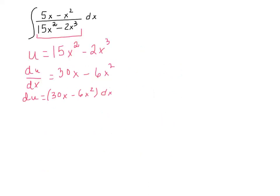Okay, so hopefully you have looked at this and you are recognizing that we can pull a factor of 6 out of 30x - 6x². And when we do that we would have du = 6(5x - x²)dx.